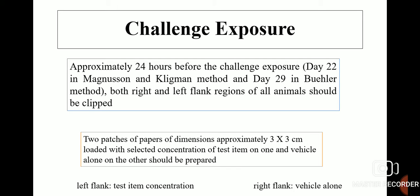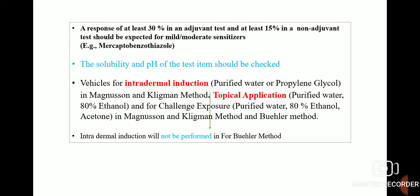For challenge exposure, approximately 24 hours beforehand — i.e., day 22 in the Magnussen and Klingman method and day 29 in the Buehler method — both right and left flank regions of all animals should be clipped. Two patches of paper approximately 3×3 cm should be prepared: one loaded with the selected concentration of test item and the other with vehicle alone. The test item is placed on the left flank and vehicle alone on the right flank. A response of at least 30% in an adjuvant test and at least 15% in a non-adjuvant test should be expected for mild or moderate sensitizers, such as mercaptobenzothiazole. The solubility and pH of the test item should be checked.